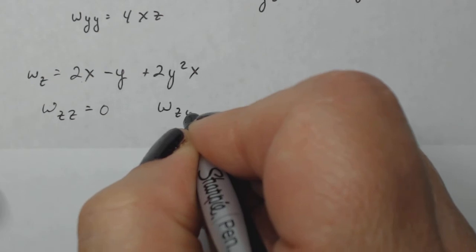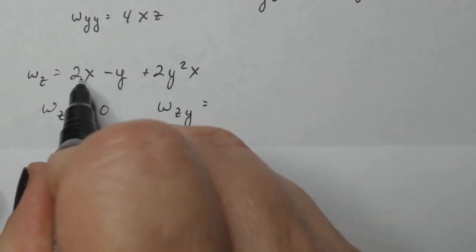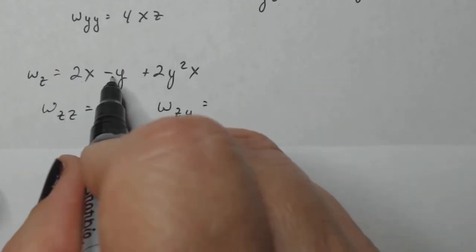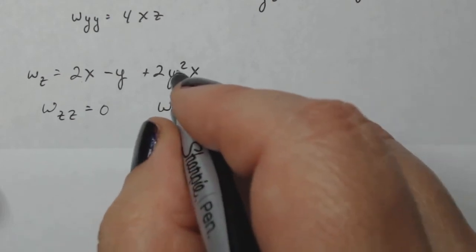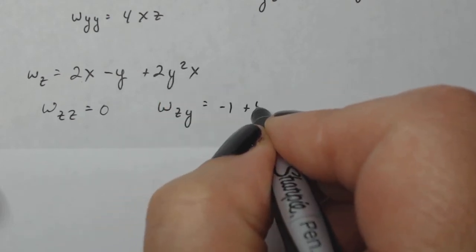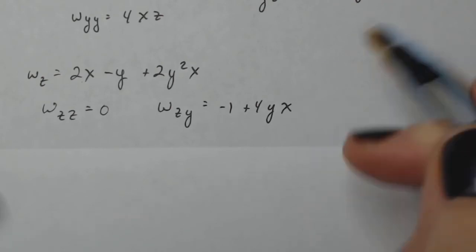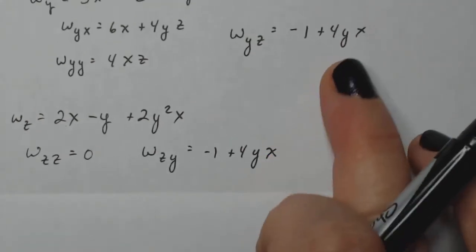W sub Z Y. No Z, no Y. There's one Y minus one. And then I got to bring that down plus four Y X and notice how those match.